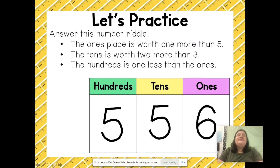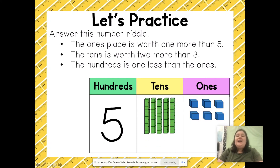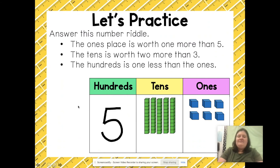Instead of writing a six in my ones place, I'm going to put six ones pieces — six ones is the same as writing the digit six. I'm also going to add five rods to show that I have 50 in my tens place, and then I'll add five flats to show that I have five hundreds.